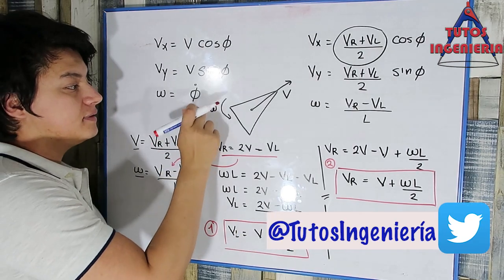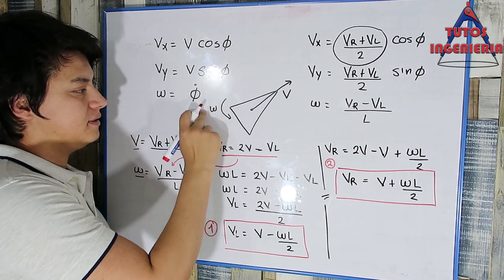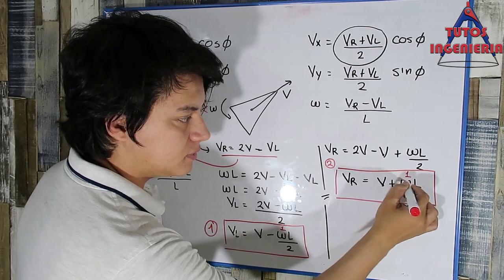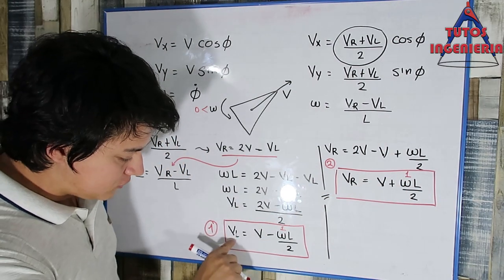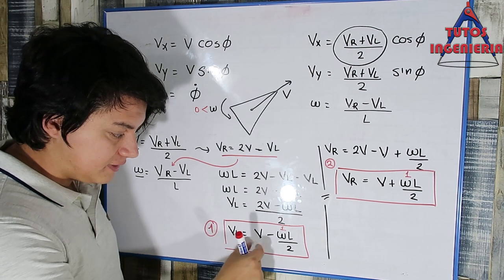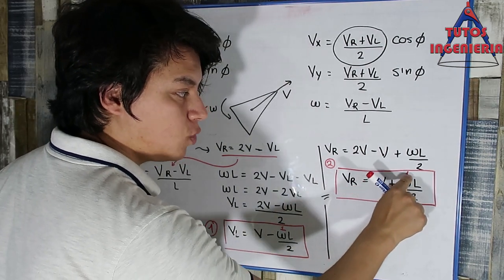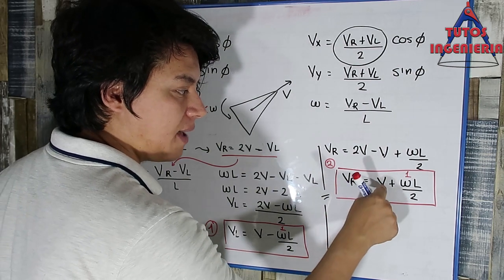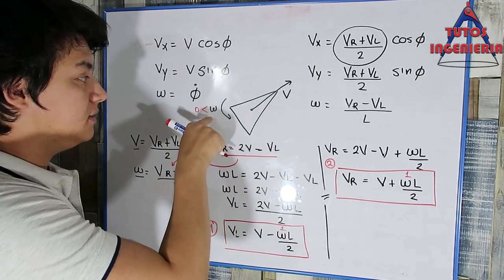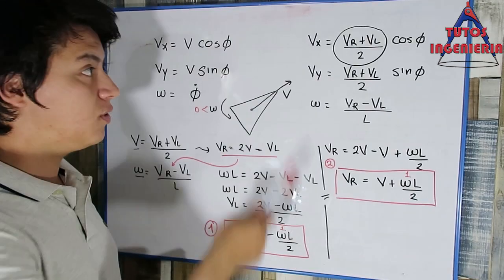If omega is greater than 0, suppose the omega L over 2 term equals 1. Then V_L equals V minus 1, which is less than V, and V_R equals V plus 1, which is greater than V. The right wheel goes faster than the left wheel, so the car turns. This equation describes the turning behavior of our car — that is amazing.